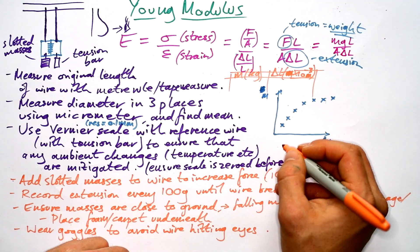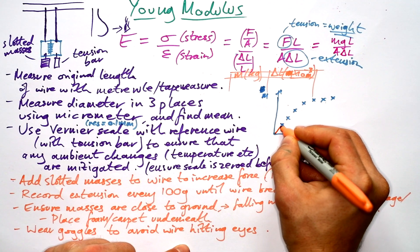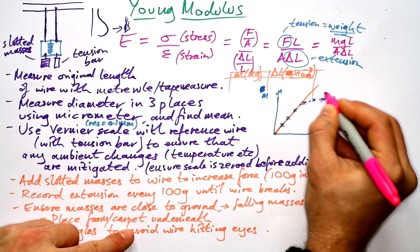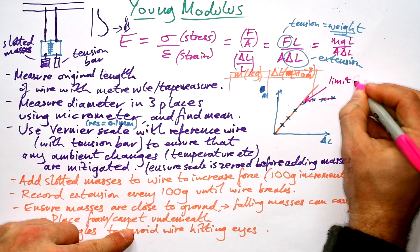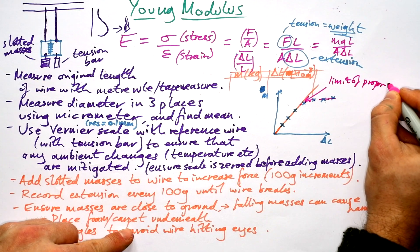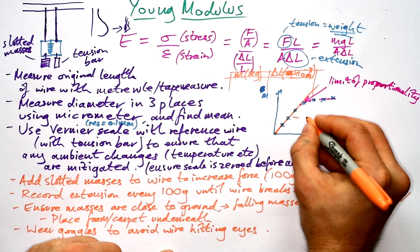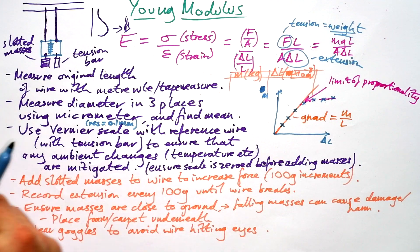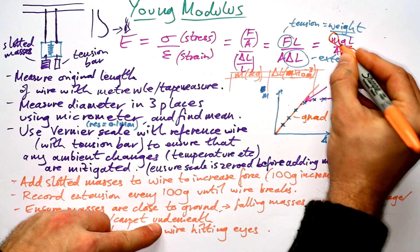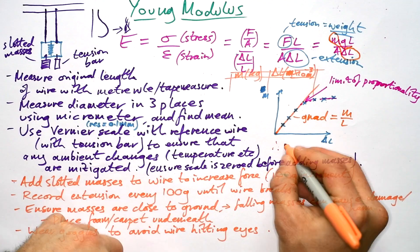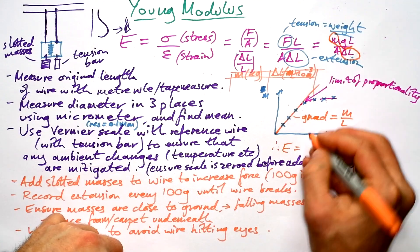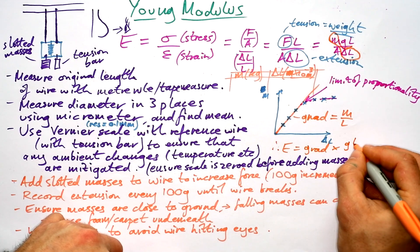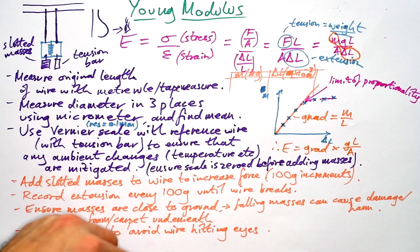OK, so our graph looks like this, but we are only concerned with the straight bit, the proportional mode. Yes, it goes around like that, doesn't it? But this here is the limit of proportionality. And we can't really do any analysis from that point onwards. So it's the gradient of this that we're interested in. And because that's equal to m over delta L, here's m over delta L here. So that means that our Young's Modulus is going to be equal to the gradient times whatever's left, gL over A. So there you go.